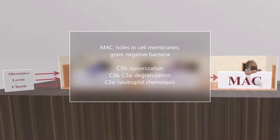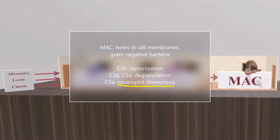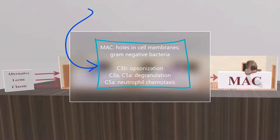The complement system also produces C3b, which is important for opsonization, preparing pathogens for phagocytosis. It produces C3a and C5a, which are important for triggering mast cell degranulation. C5a is also important for neutrophil chemotaxis. So MAC is not the only thing we want to produce — we want to produce all these products.